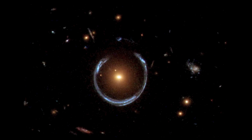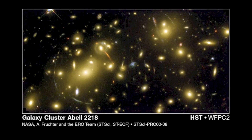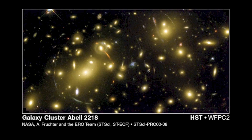Without the equations of general relativity describing how space and time can be warped by mass, we wouldn't understand what we're seeing. Here is a galaxy cluster observed by Hubble where we also see gravitational lensing — thin, wispy, squashed-looking galaxies in the periphery around the cluster. That is light from galaxies behind the cluster moving in a curved path due to the warp in space-time.